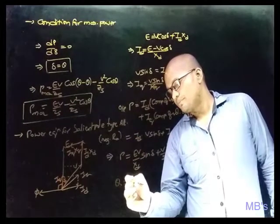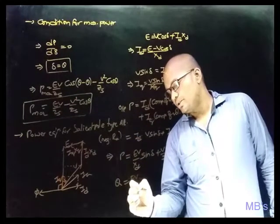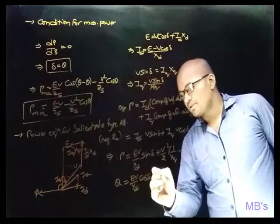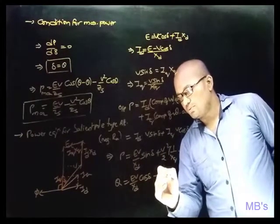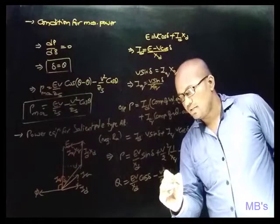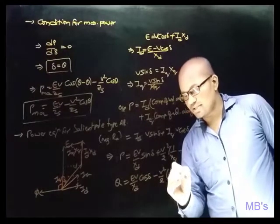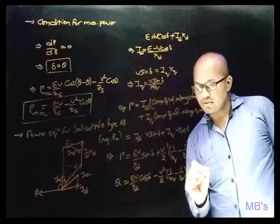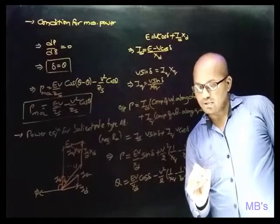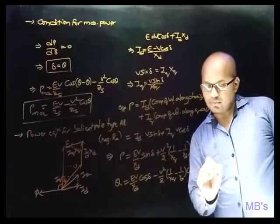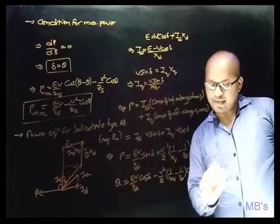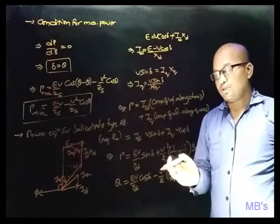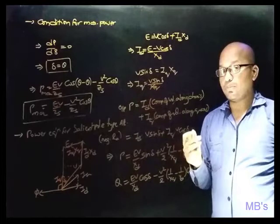The reactive power Q for the salient pole alternator is given by Q equals (EV/Xd) × cos δ minus (V²/2) × (1/Xq − 1/Xd) × cos 2δ minus (V²/2) × (1/Xq + 1/Xd). These are the real and reactive power equations for the salient pole type alternator.